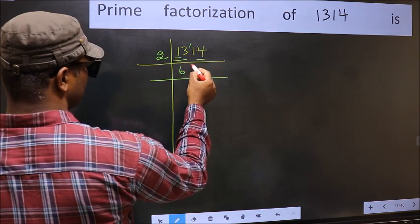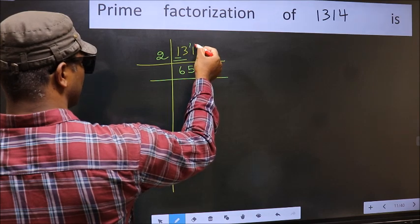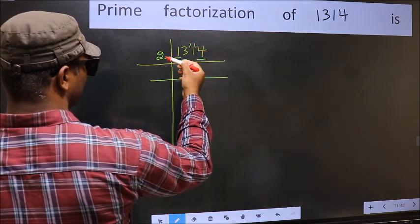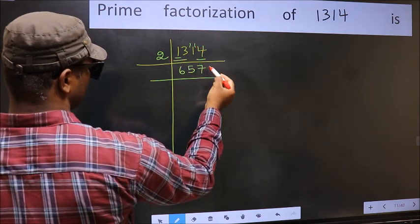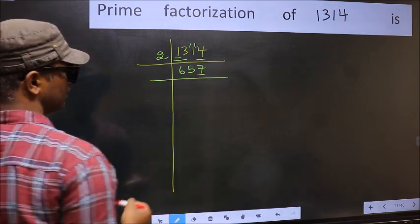A number close to 11 in 2's table is 2 times 5 is 10. 11 minus 10 is 1, carry forward 14. When do we get 14 in 2's table? 2 times 7 is 14. Now last digit 7 is not even, so not divisible by 2.